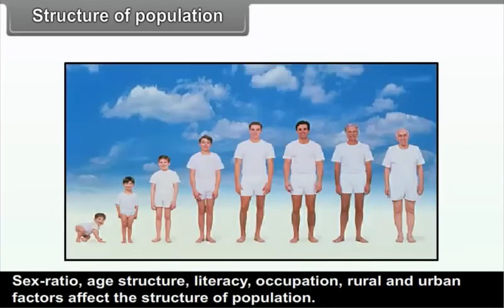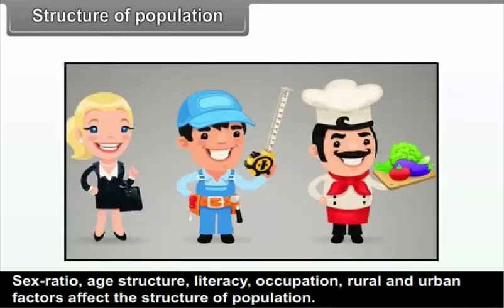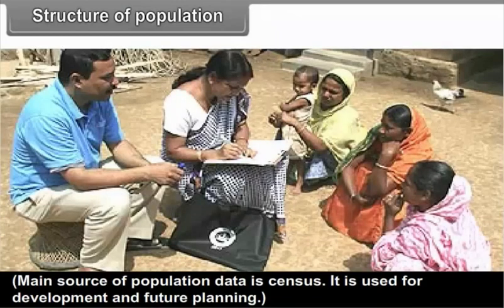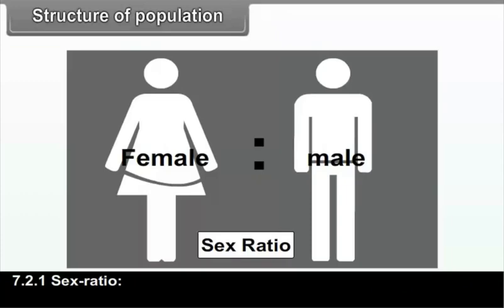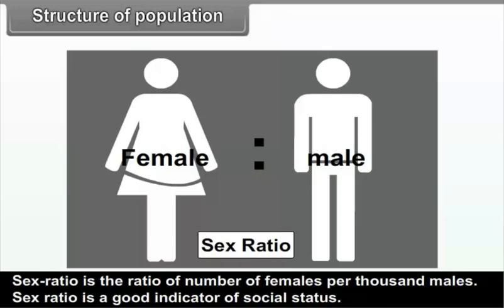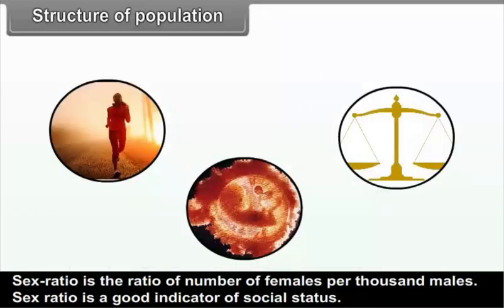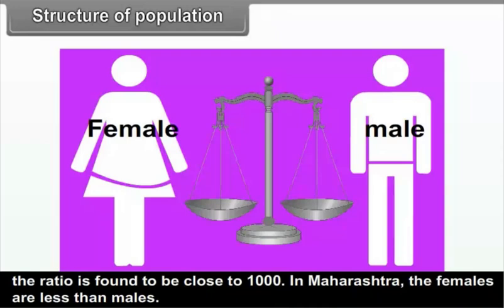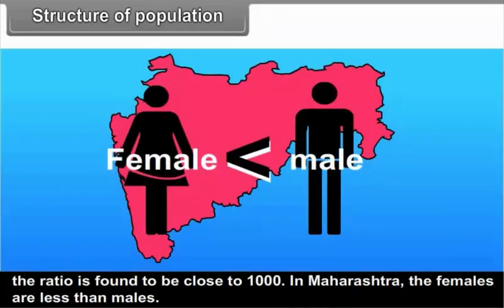7.2 Structure of Population. The structure of population includes sex ratio, age structure, literacy, occupation, and rural-urban composition. The main source of population data is the census, which is used for development and future planning. 7.2.1 Sex Ratio: sex ratio is the ratio of number of females per thousand males. It is a good indicator of social status — where women have better social status, the difference between males and females is less and the ratio is close to 1000. In Maharashtra, females are fewer than males.